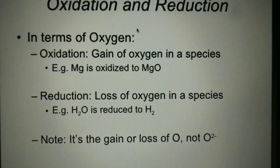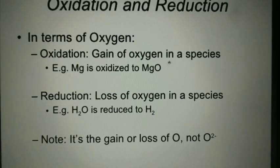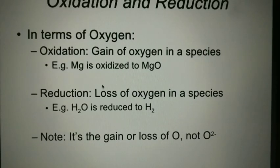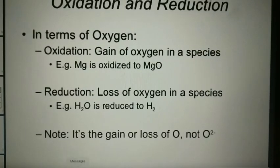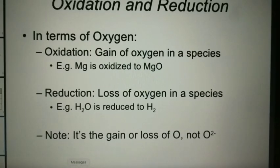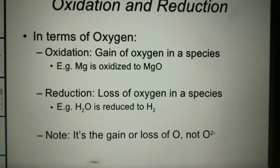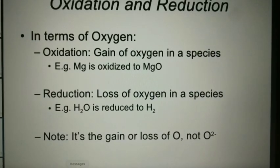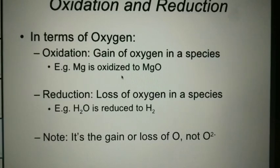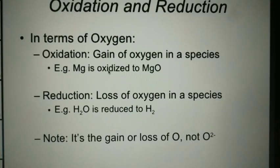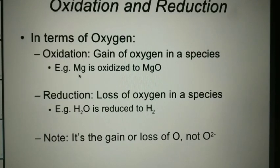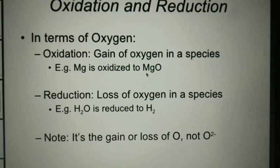Now, oxidation and reduction in terms of oxygen. Oxidation means gain of oxygen in a species. For example, burning of carbon, magnesium, and phosphorus in the presence of oxygen to form their oxides are oxidation reactions. Oxygen is added to carbon, magnesium, and phosphorus. Magnesium is oxidized to MgO, carbon is oxidized to CO2, and phosphorus is oxidized to P2O5, that is phosphorus pentoxide.